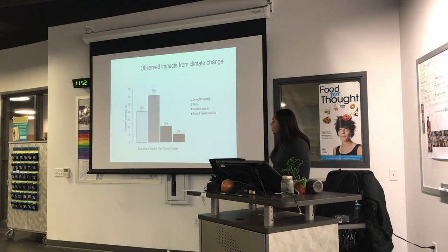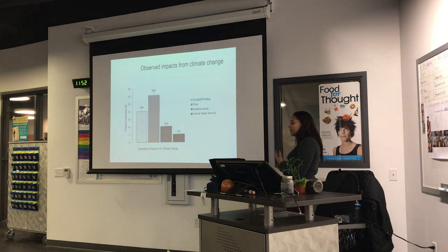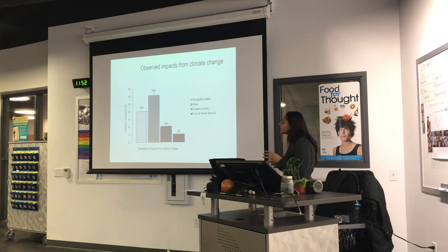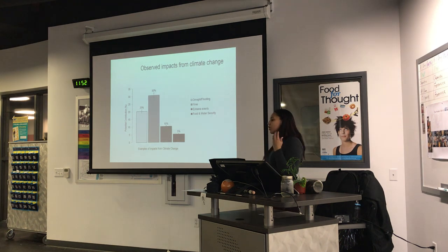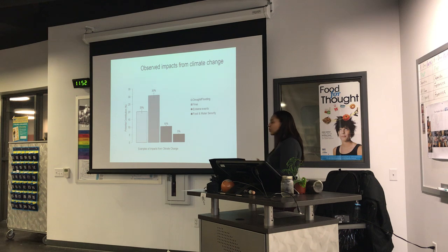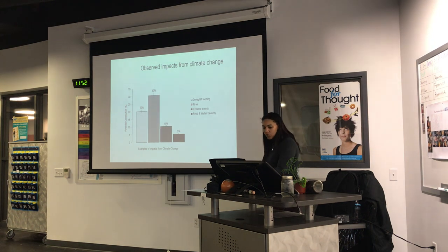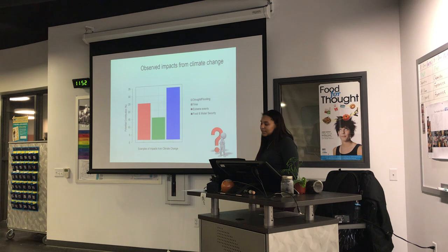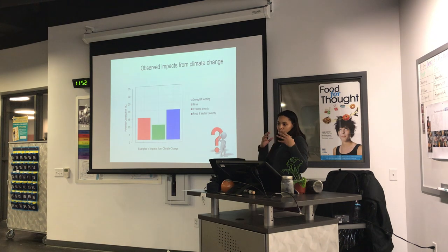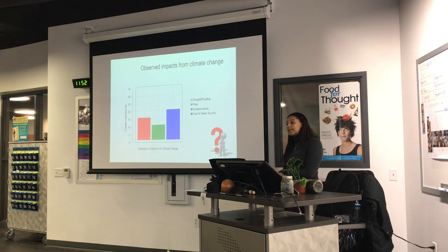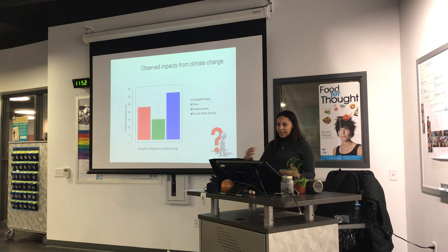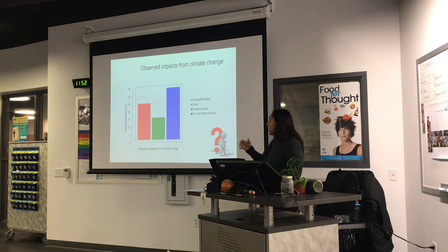One of the hardest parts about the observed impacts from climate change is we don't know the percentage contribution of each different type of impact. We're seeing droughts, fires, extreme events in water and food security, but we don't know the potential contribution to climate change — not only throughout the year, but also seasonally, annually, decadally, and in long-term projections as well.